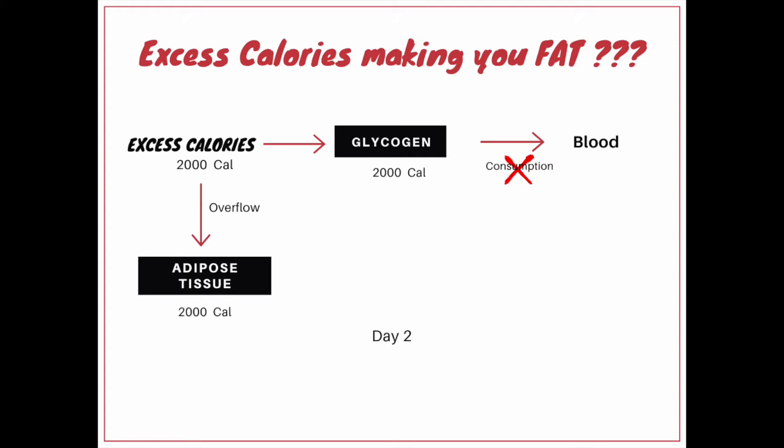On day two, he does the same thing: 4000 calorie consumption, 2000 calorie utilization due to sedentary lifestyle, and the excess calories is again 2000. But on day two, the glycogen is already full — there is no space to accommodate this extra calorie. So the entire 2000 calories will overflow towards adipose tissue, and the balance of adipose tissue becomes 2000 calories.